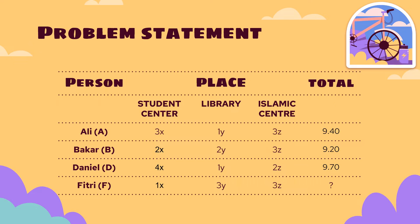Next, the problem statement. Ali, Bakar, Daniel and Fitri each park at three different places which are Student Center, Library and Islamic Center. The total price for weekly bicycle parking rent for Ali, Bakar and Daniel is shown on the table. However, the total price for Fitri is unknown. Find the value of rent per day — X, Y and Z — and the total for Fitri's weekly bicycle parking rent payment.